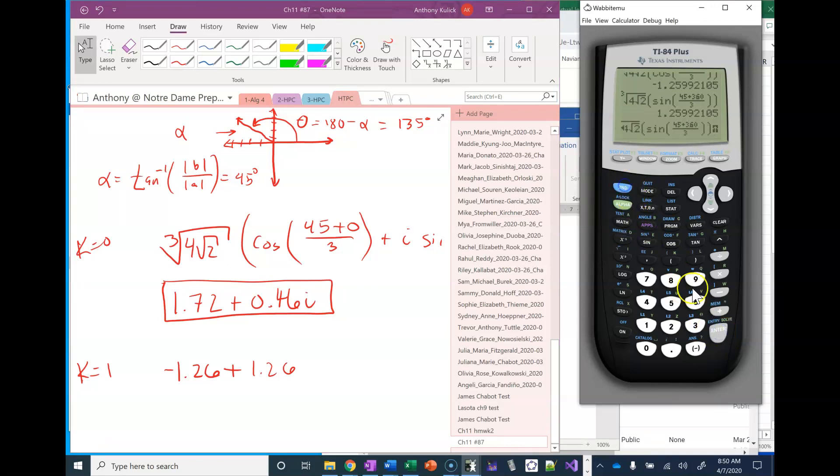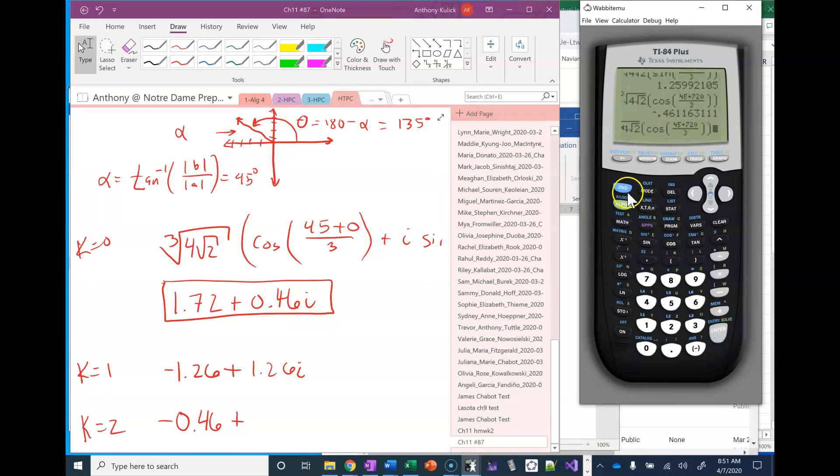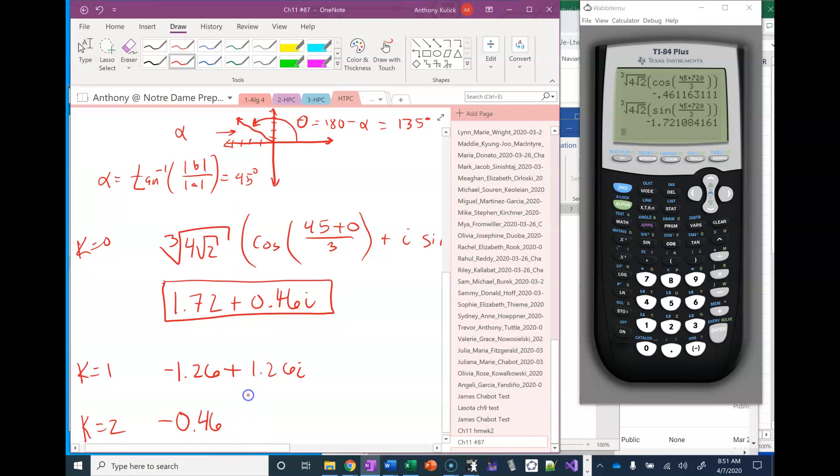And then I'm going to press second and enter twice. I'm going to go back into the cosine one and change this 360 to a 720. So that gives me negative 0.46. I got the i there on that previous one. And then we'll go back and press second and enter twice to get to the sine one. We'll go back and just change that 360 to a 720, which gives me, well let's write that as a minus, instead of plus minus 1.72i. So those should be the three answers.